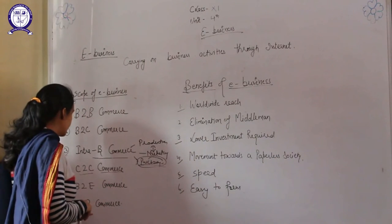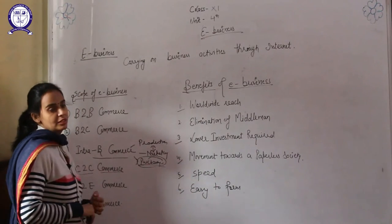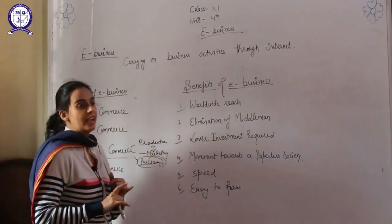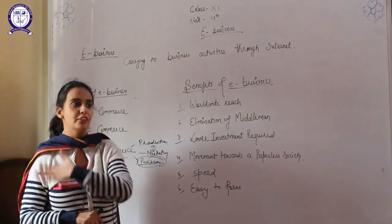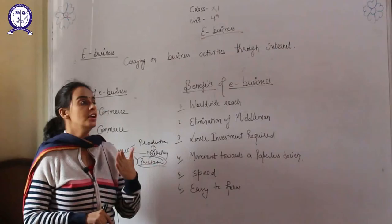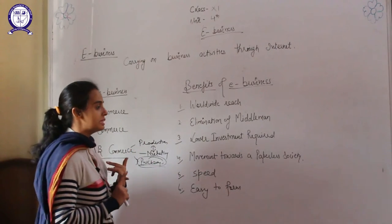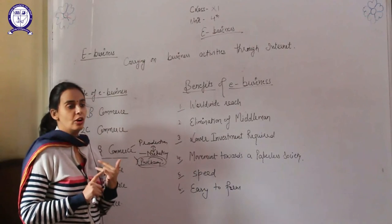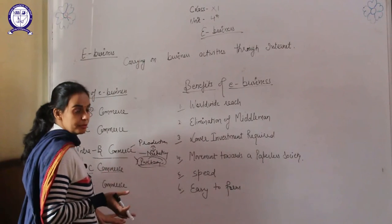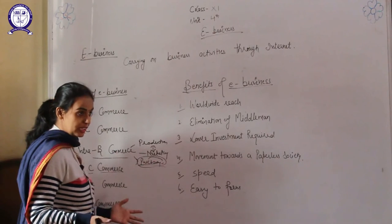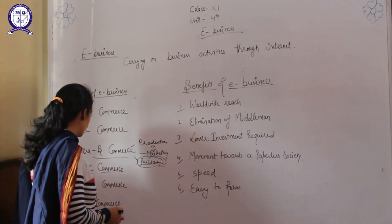Nowadays most employees of IT companies are doing work from home, so B2E is very helpful. Now C2B — customer or consumer to business. If any consumer is facing a complaint regarding the product, the initiative is from the side of the customer to the business. They can write to the business firm's email ID, contact the business firm to solve their problems or grievances, or give any suggestion. This is C2B commerce.